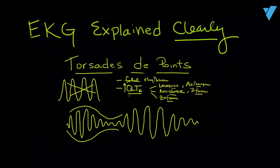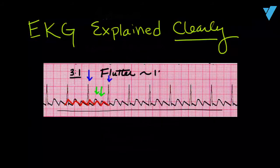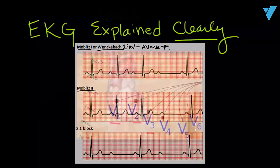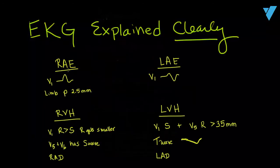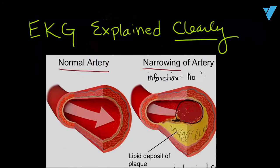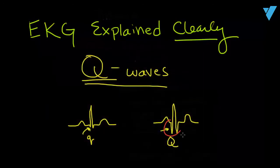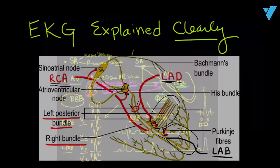We'll cover the QTc and the potentially life-threatening torsades de pointes, atrial fibrillation and flutter, widened QRS complexes and the various types of heart blocks, using precordial leads to hone in on certain areas of the heart, atrial enlargements and ventricular hypertrophies, acute coronary syndromes, myocardial infarction, and pericarditis. We'll talk about Q-waves, ST-segment and T-wave changes that we see with ischemia, bundle branch blocks, and fascicular blocks.